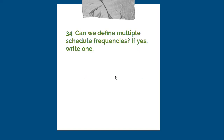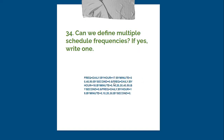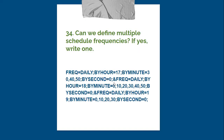Question 34: Can we define multiple scheduled frequencies? Yes, we can define multiple scheduled frequencies by using an ampersand (&) in between. For example, from the first frequency block to the ampersand is one schedule, from the ampersand to the next is another, and so on.